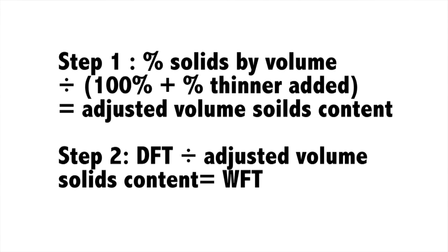For the second formula, we have to determine the new solids content in the coating after we add thinner. To do that, we take the solids by volume from the PDS and divide that number by 100% plus the percent thinner that is added — that gives the new solids by volume. The second step is then dividing the desired dry film thickness by that new volume solids after thinning, which gives the wet film thickness.